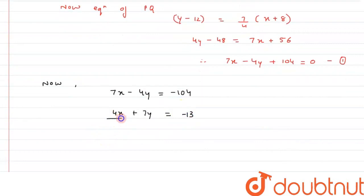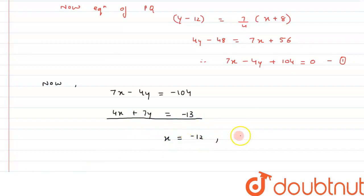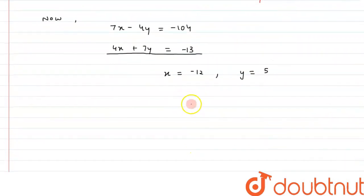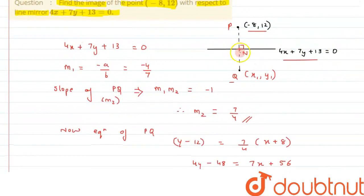Alright, so on simultaneously solving, we can calculate the value of x and y. Therefore from here, the value of x comes out to be minus 12, and substituting this value in either equation, we get the value of y as 5. Alright, so this is the coordinate of N, that is (minus 12, 5).